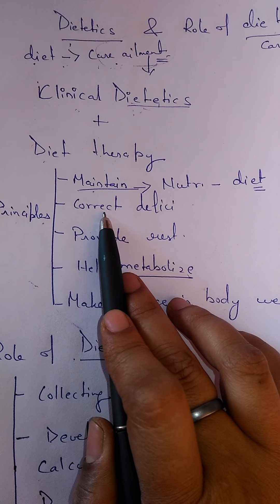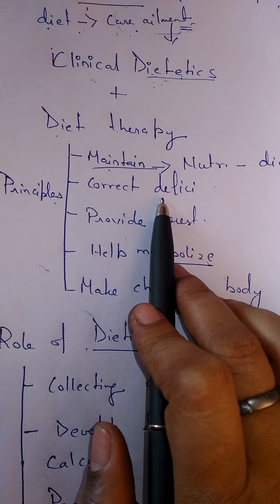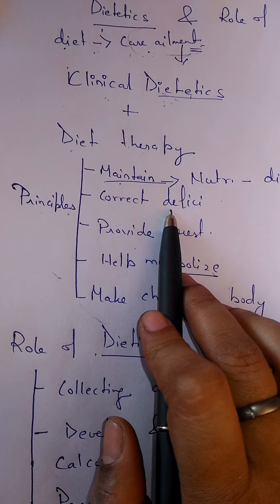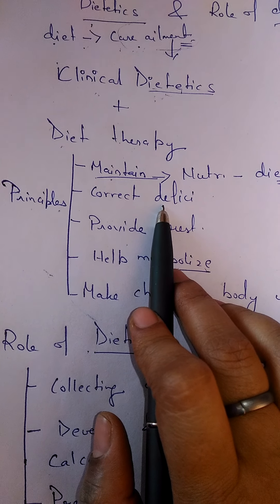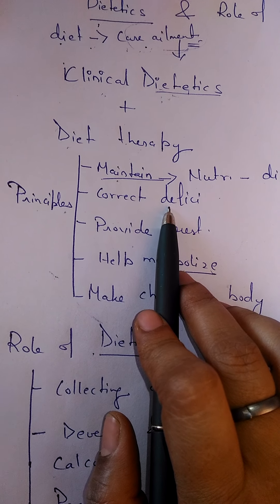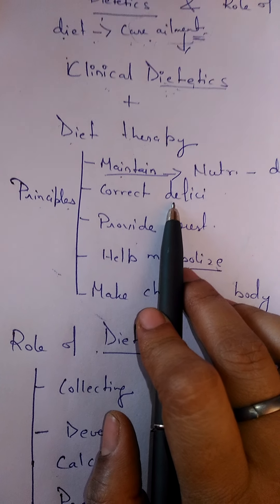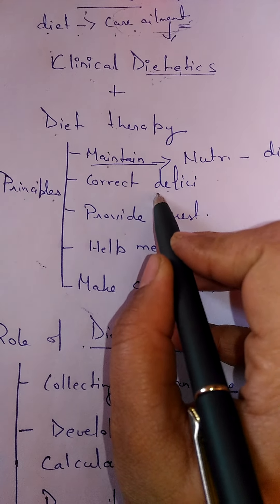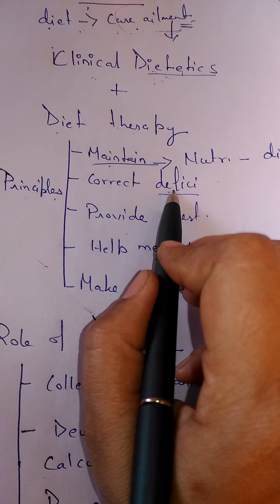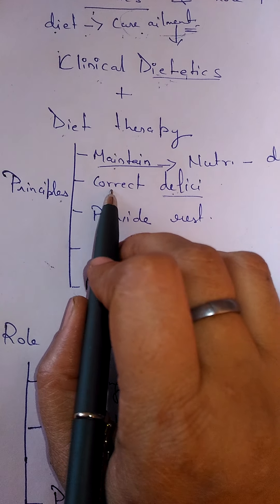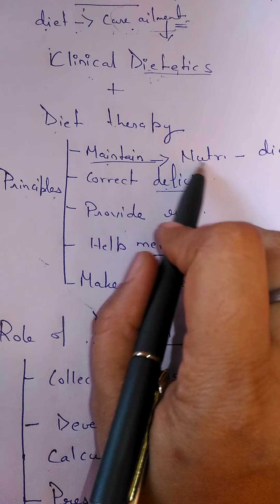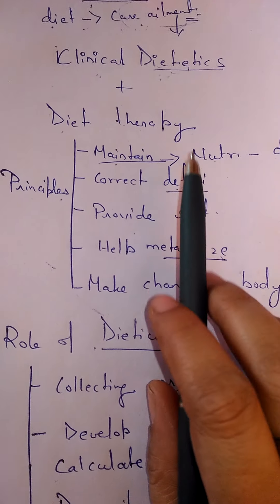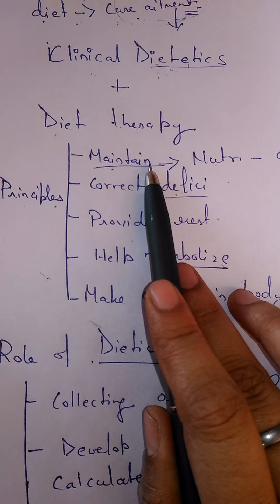Then we have to do the second thing, that is to correct deficiencies. Certain times we say I'm having problems in my vision or we are just not feeling well, our skin is getting dry. What is the reason for that? There could be a deficiency of certain nutrients in our body. How can it be corrected? It can be corrected by following proper nutrients.